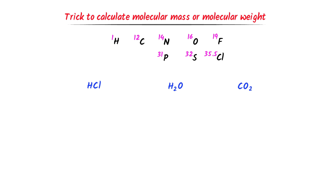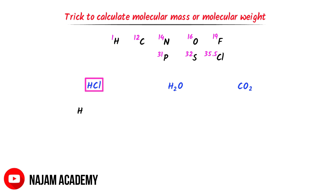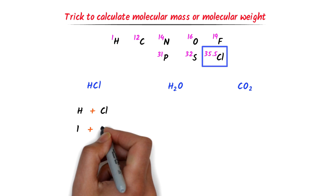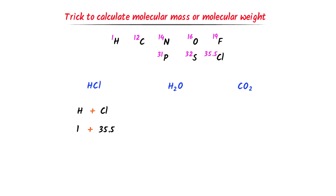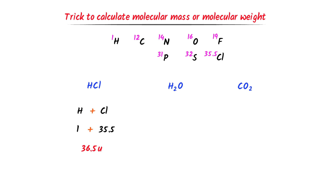We can see that there is one atom of hydrogen and one atom of chlorine present in HCl. Now I add their respective atomic masses. The atomic mass of hydrogen is 1 unit and the atomic mass of chlorine is 35.5 units. Adding them, I get 36.5 units. So the molecular mass of HCl is 36.5 U.